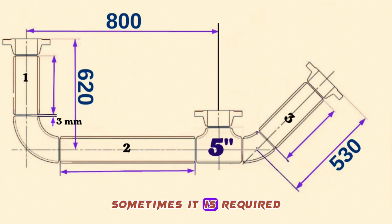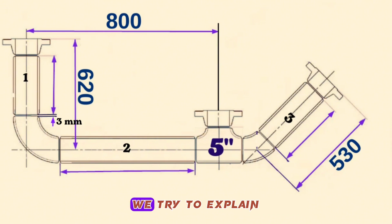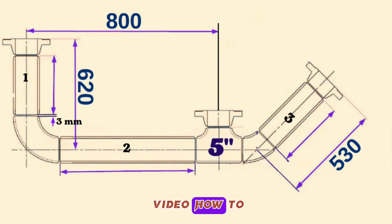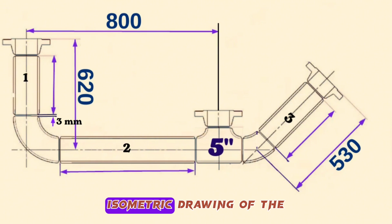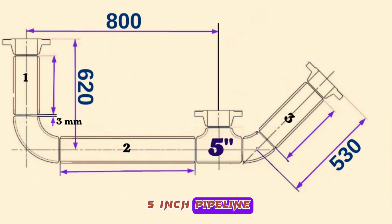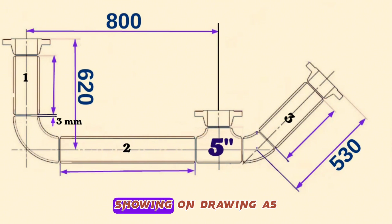Sometimes it is required to calculate the length of the pipe sections in the piping isometric drawings. We try to explain with examples in this video how to calculate the length of the pipe pieces in the pipeline. This picture that you see in the video is a 2D isometric drawing of a 5-inch pipeline. This pipeline consists of these pipe fittings: 3 off 5-inch pipe pieces showing on drawing as Item 1, Item 2, and Item 3.